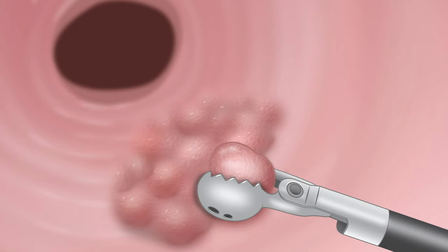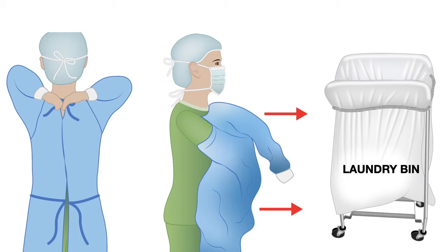Once the case is done, you need to do a few things. You need to remove your PPE and dispose of it in a proper bin. If you use a reusable gown, that goes to the laundry for rewash — put it in the laundry bin. If it is a single-use gown, throw it away in a waste bin or a biohazard bin depending upon the contamination of the gown.